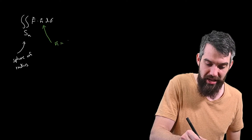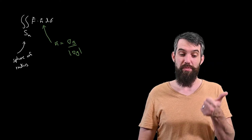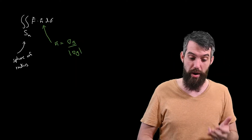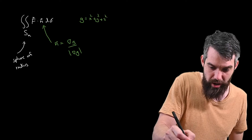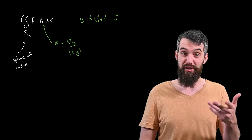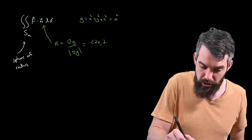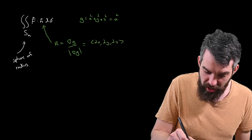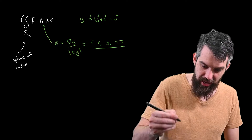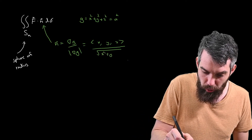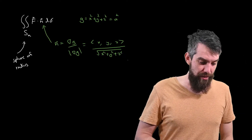What's the outward normal N? I'll use the gradient method: the surface is described by x² + y² + z² = A², so G = x² + y² + z². The gradient gives (2x, 2y, 2z), divided by its length which is the square root of x² + y² + z². The 2s cancel, so the normal N is simply (x, y, z) divided by r.